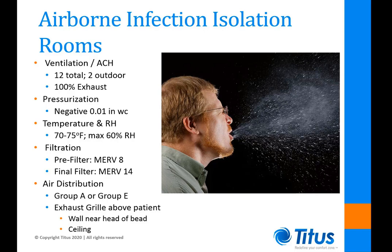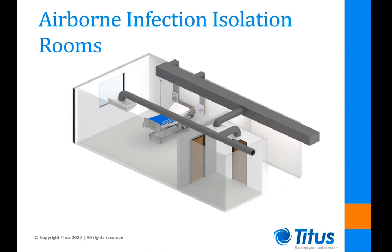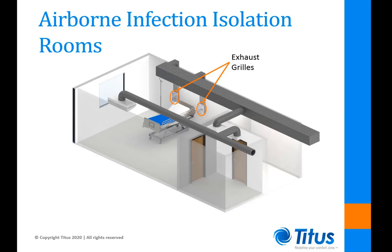Looking at a typical AII room layout, there is a one-way radial throw diffuser throwing towards the bed, located on the wall opposite the foot of the bed, directing airflow from the left side of the room over the patient towards two exhaust grills on the side wall. The grills can be placed on the side wall or ideally about a foot or two out from the wall in the ceiling. This non-aspirating, radial throw diffuser pushes into the room, displaces the air around it, and creates a path for air flow over the patient and up to be exhausted and removed from the space.